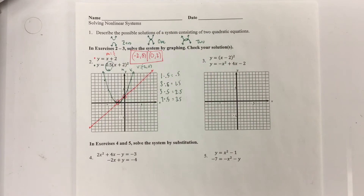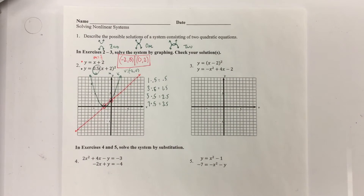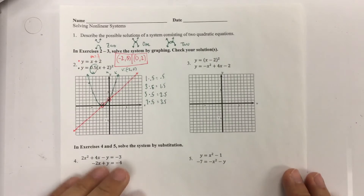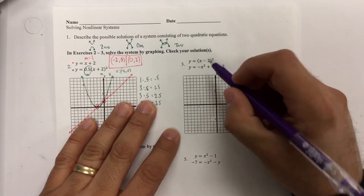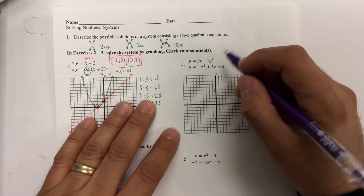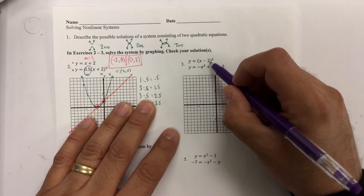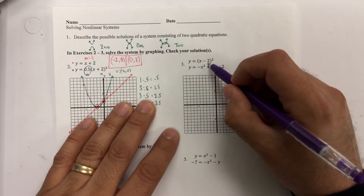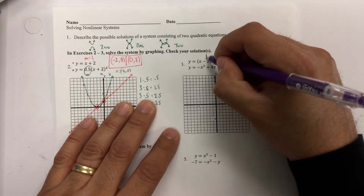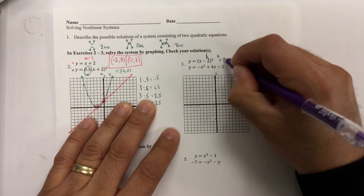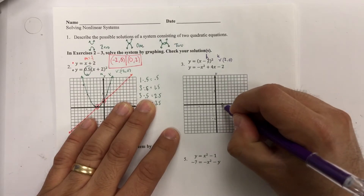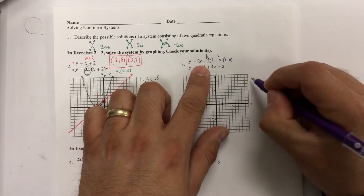For number 3, we do the same thing. These are two quadratic functions — two parabolas instead of a parabola and a line. The first one is in vertex form: a is 1, h and k are given. The opposite of h gives the vertex at 2, 0, so I plot that point. Using the 1, 3, 5, 7 pattern and multiplying by a value of 1, the values stay 1, 3, 5, 7.